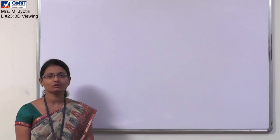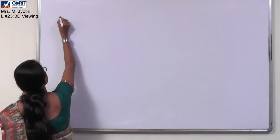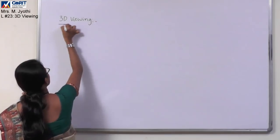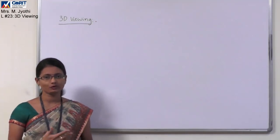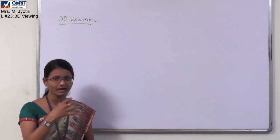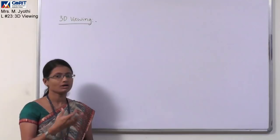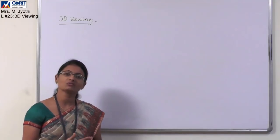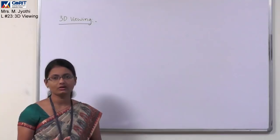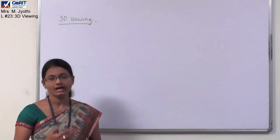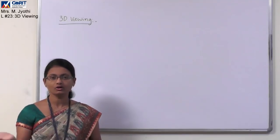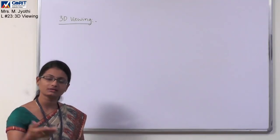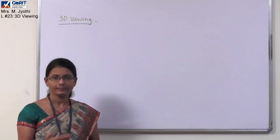We will be moving to our next concept: 3D viewing. Viewing is nothing but selecting a part of your complete scene — called a shot — that we want to display on a display device. Whenever we talk about 3D viewing, it is more complex compared to 2D viewing. In 2D viewing, objects and display devices are both 2D: world coordinates are clipped against a window and translated to a viewport for display.